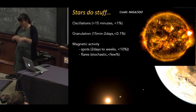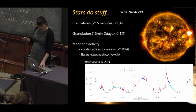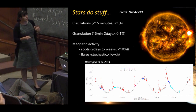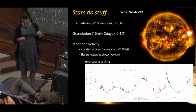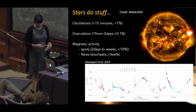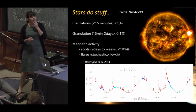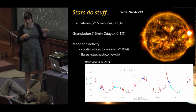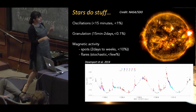Stars also have flares — big magnetic reconnections that release bursts of energy. These are more stochastic, very hard to predict or model in advance, though they usually have well-characterized shapes. They're on the order of a few percent — much larger than transits. Here's a flare-active Kepler star from Jim Davenport where you see both rotational spot modulation and flares on top. The color represents how many people identified each event as a flare. If you try to find a transit here, it's very hard.